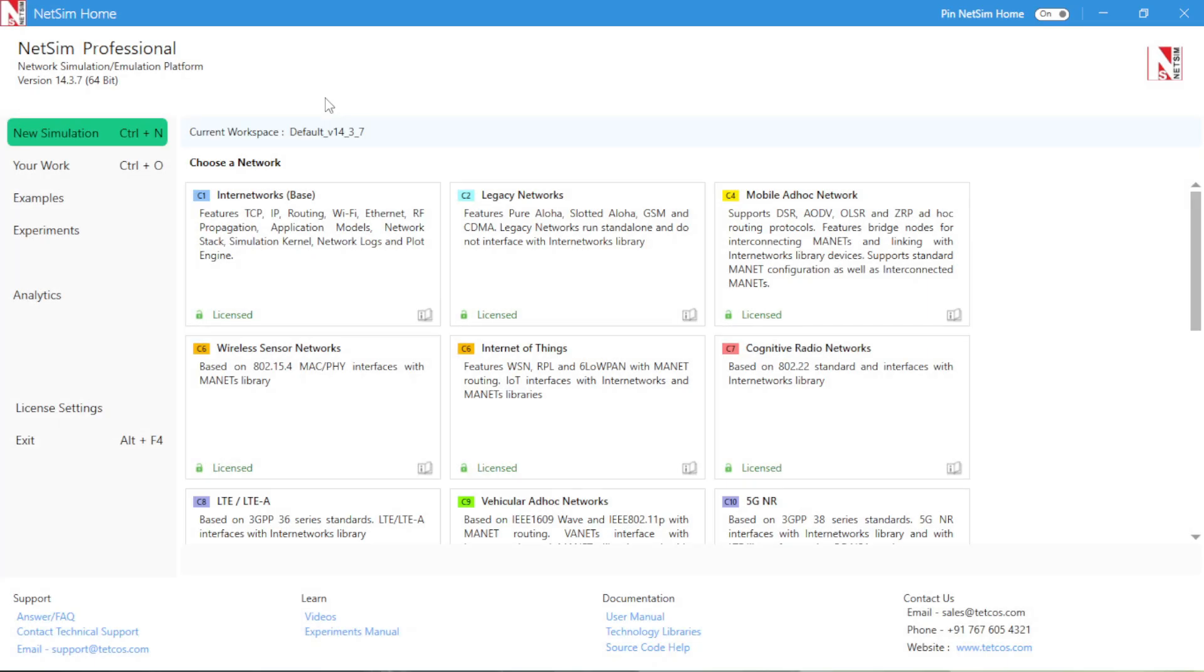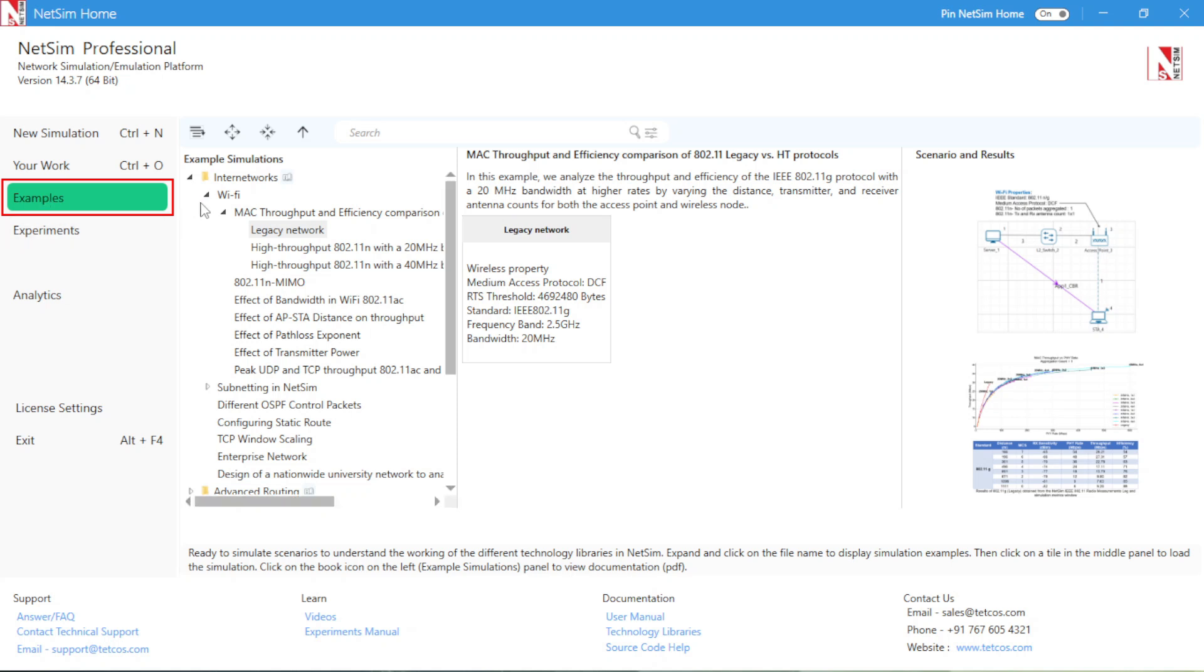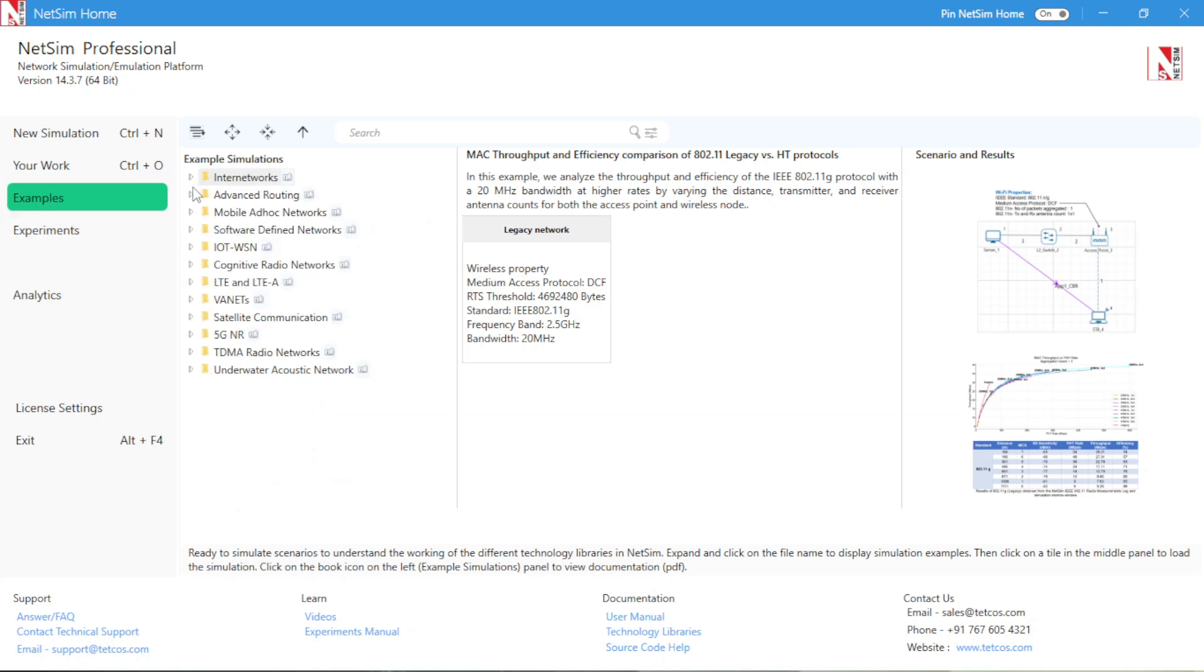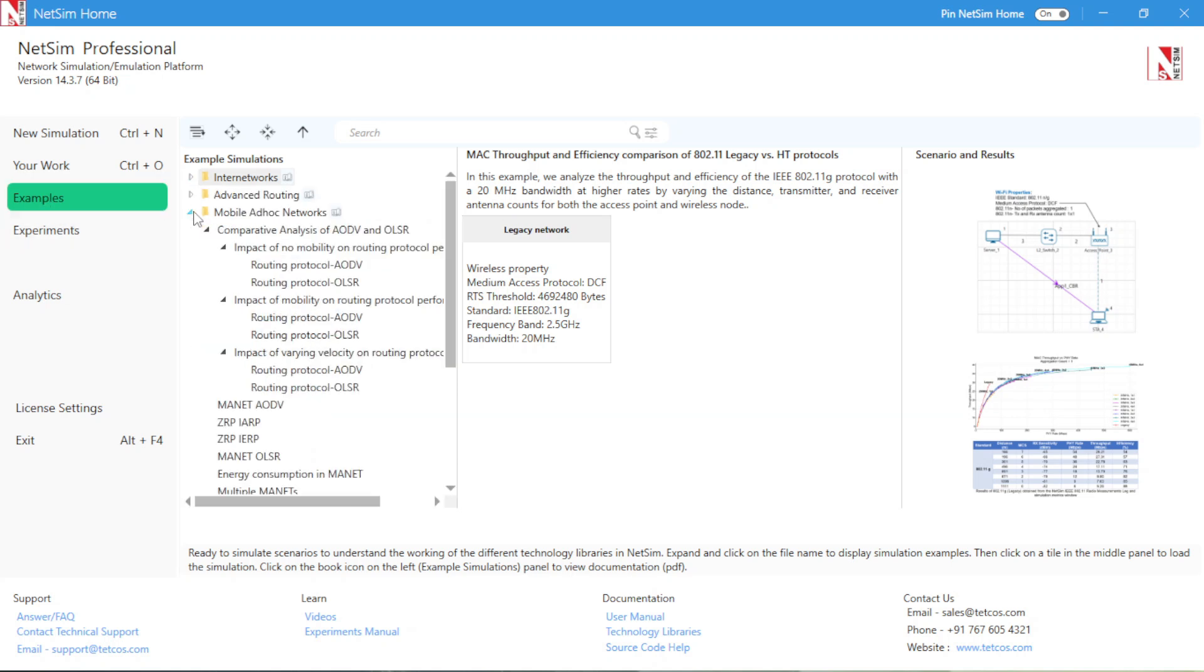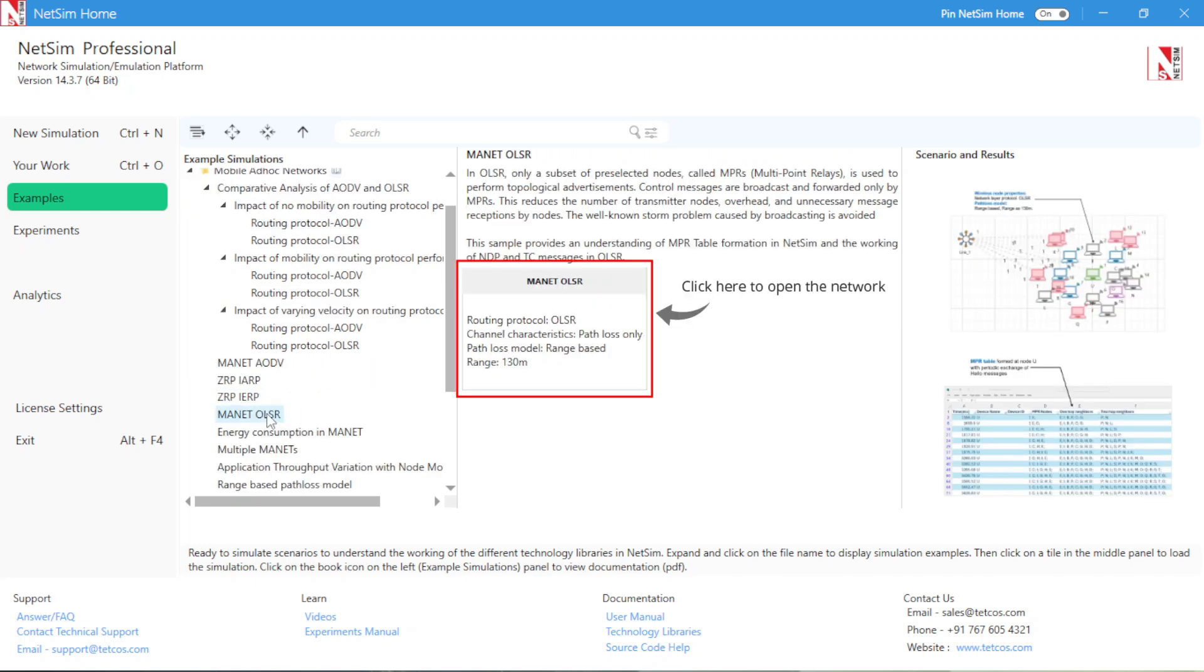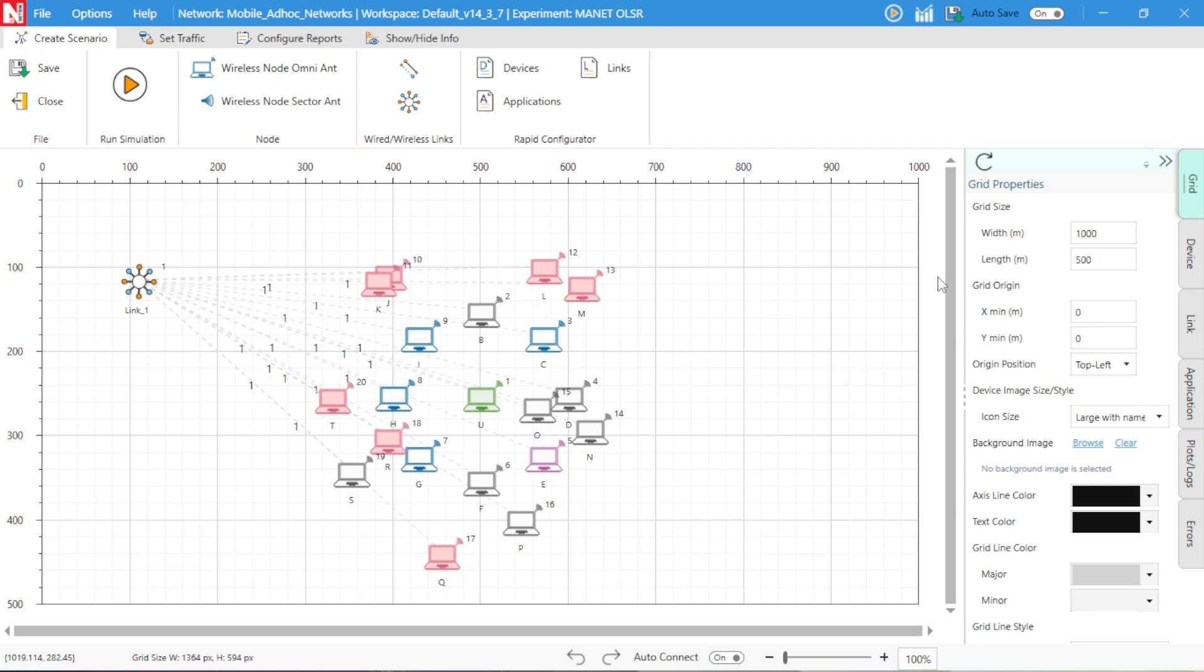The same scenario is available as an example in NetSim. Click on the examples panel on the left in NetSim. Navigate to Mobile Ad Hoc Networks, expand the section, and click on the MANET OLSR example. This will open the NetSim design window with 20 nodes placed in the network. The grid size of this network environment is 1,000 meters by 500 meters. All 20 nodes are automatically connected via an ad hoc link. The ad hoc link icon in NetSim is a logical link, and it conveys the fact that all nodes are part of the same wireless network.